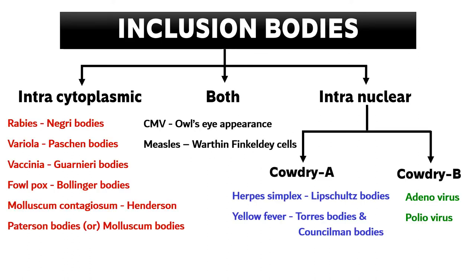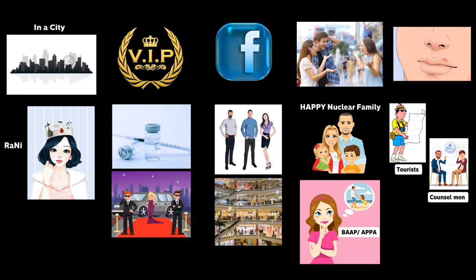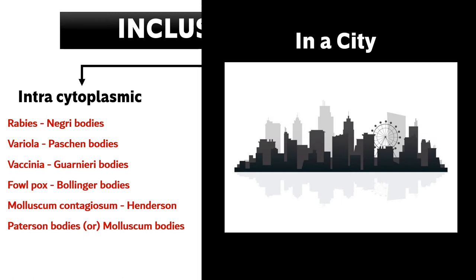So we have finished all the examples of various inclusion bodies — the intracytoplasmic, the intranuclear Cowdry A and Cowdry B, and both intracytoplasmic as well as intranuclear. Now I have created various mnemonics using a single story so that you can remember the classification of inclusion bodies very easily. The first mnemonic is "inner city" — when I say the word city it reminds you of intracytoplasmic inclusion bodies. Inner city equals intracytoplasmic.